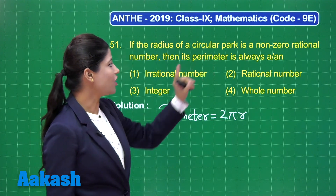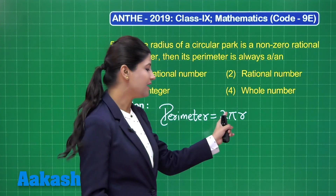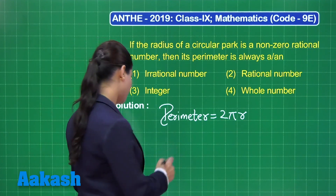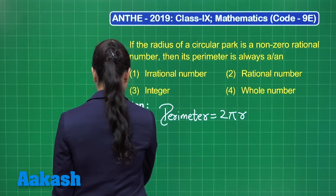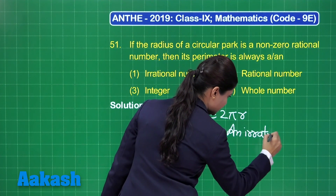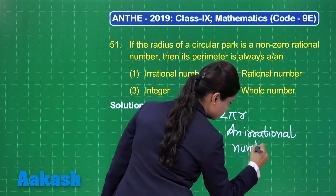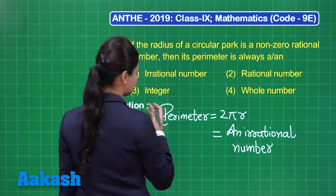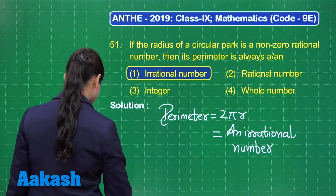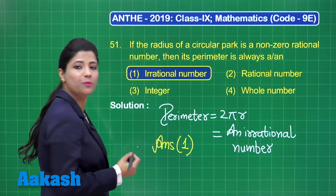If we are talking about a non-zero rational number in place of r, then π is irrational. An irrational number π multiplied by any non-zero rational number will result in an irrational number. So the perimeter is definitely going to be an irrational number. Out of these four options, we can select option number 1. The answer for this question is option 1. I hope it is clear to you.